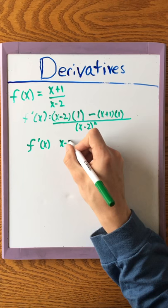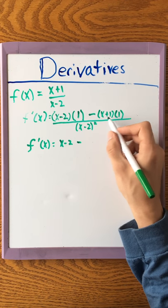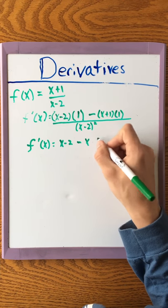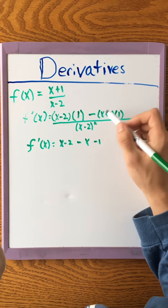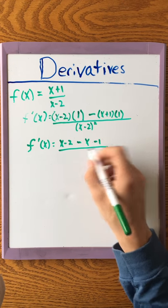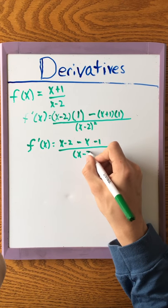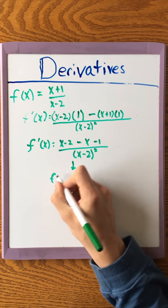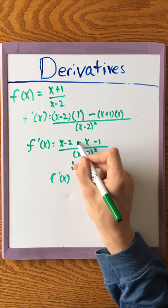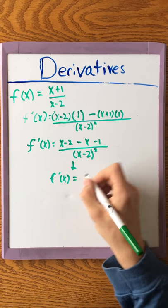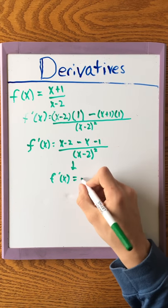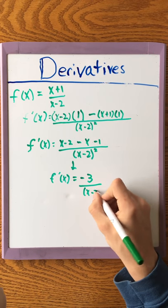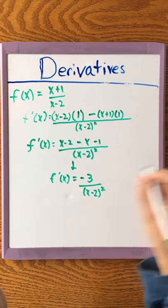Cleaning that up: (x-2) times 1 is just x-2, minus (x+1) times 1 which is x+1 — you need to distribute the negative — all divided by (x-2) squared. The x's cancel each other out, and negative 2 minus 1 is just negative 3, so the answer is -3/(x-2)².